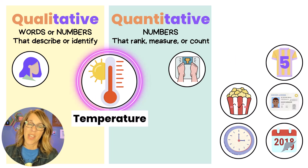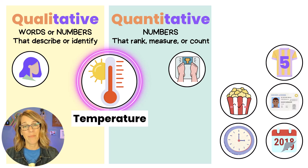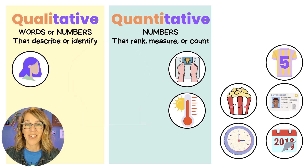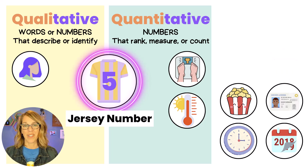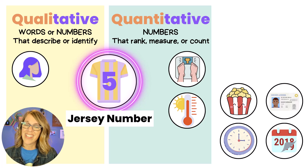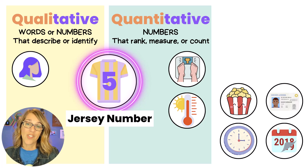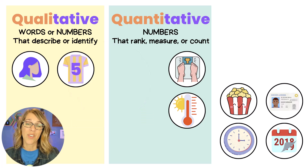Next, temperature. Temperatures are also a number, so quantitative is a great guess. The higher the temperature, the hotter it is outside, so we put this under quantitative as well. But what about jersey numbers? It's not true that a higher number means a better player — instead, these numbers identify one player from another. So jersey numbers go under qualitative.